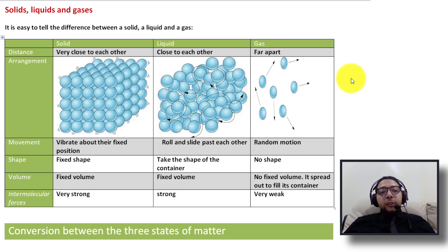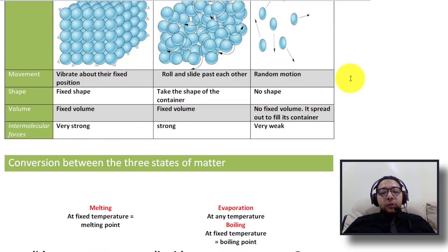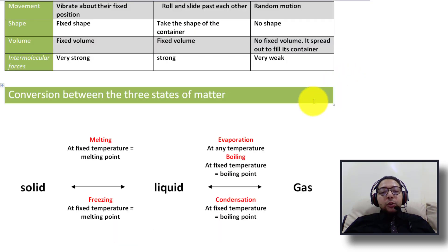So this was the comparison between solids, liquids, and gases. We compared them in terms of distance, arrangement, movement, shape, volume, and intermolecular force. Now we're going to talk about the conversion between the three states of matter.